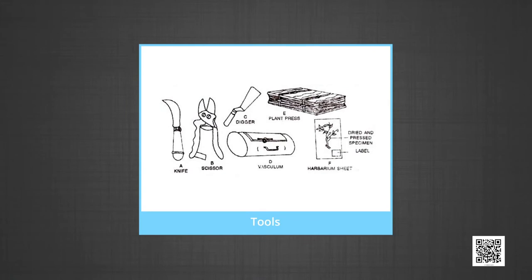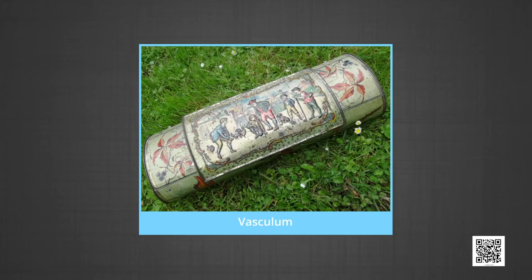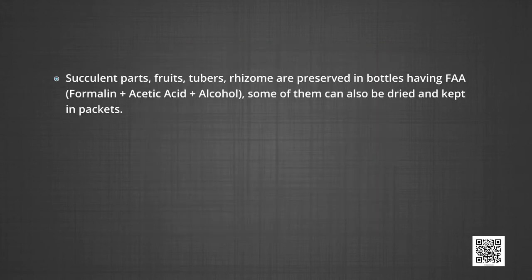Herbarium technique: the collection of specimens requires regular field visits. One has to get information about the place, habitat, season and time of collection of the specimen. For collecting specimens, one carries simple tools like a digger for digging roots, a scissor for cutting twigs, a knife for woody twigs, and a pole with hook for collecting parts of tall trees. Vasculum or polythene bags are used temporarily to store fresh shoots to avoid loss of moisture and distortion. Vasculum is a box of about 40 by 60 cm, 20 cm in width and 25 cm in depth. Succulent plants, fruits, tubers and rhizomes are preserved in bottles containing FAA — formalin, acetic acid and alcohol. Some specimens can also be dried and kept in packets.